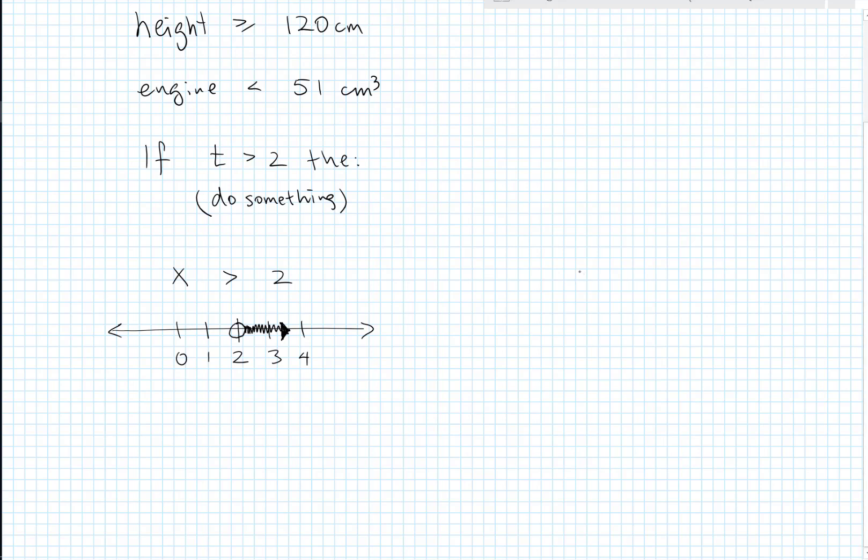So, how do we graph something very similar but not a strict inequality like x is greater than or equal to 2? Well, you end up with the same looking graph except, and we'll try to put the 2 in the middle. We'll have the 0, 1, 2, 3, 4, except now you have a solid circle. So, the solid circle is an indication that 2 is part of this solution as is everything to the right of 2.